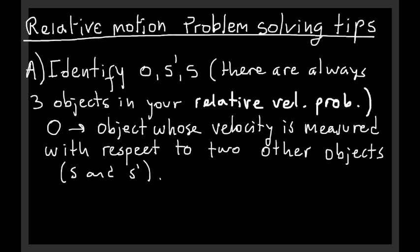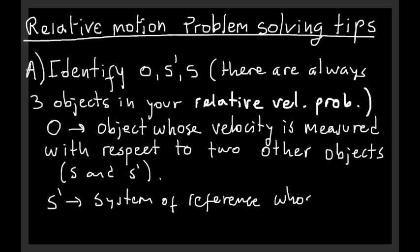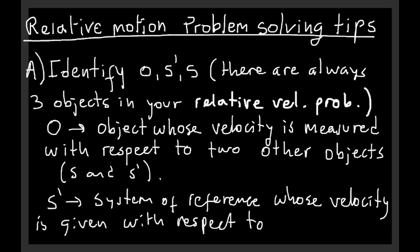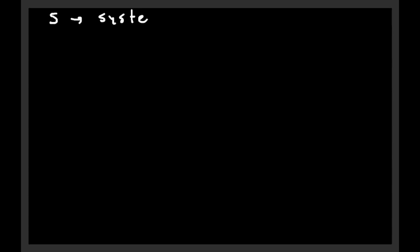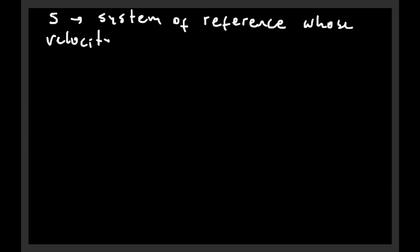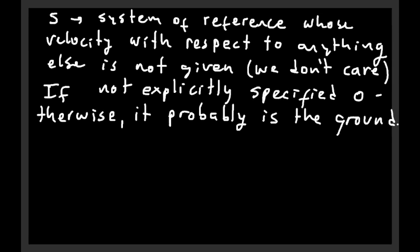The object that plays the role of O is the object whose velocity is measured with respect to two other objects. The object that plays the role of S' is the system of reference whose velocity is given with respect to another object or system of reference. And S is the system of reference whose velocity is not given — we don't care about its velocity with respect to anything else. Sometimes this is the object not explicitly mentioned in the problem; if so, it's probably the ground.